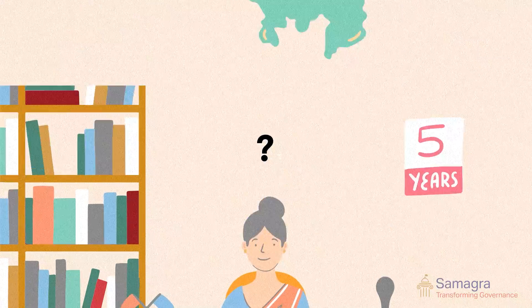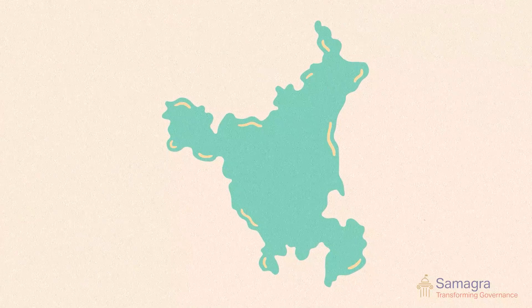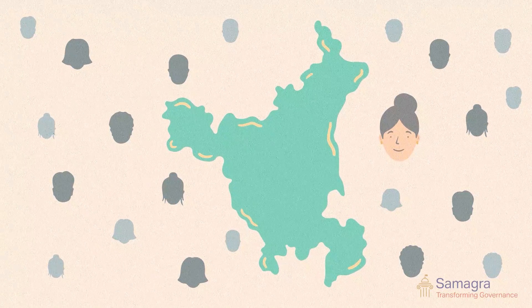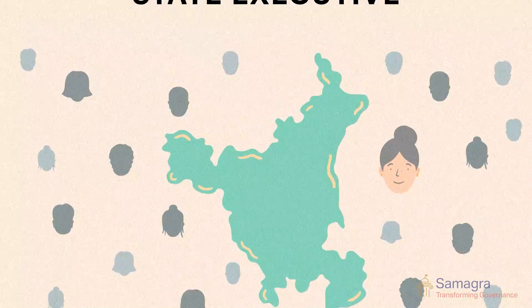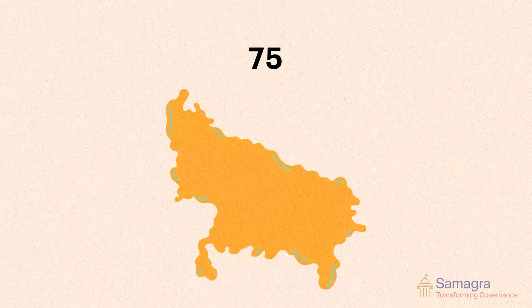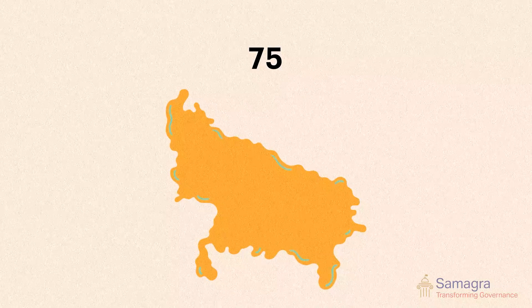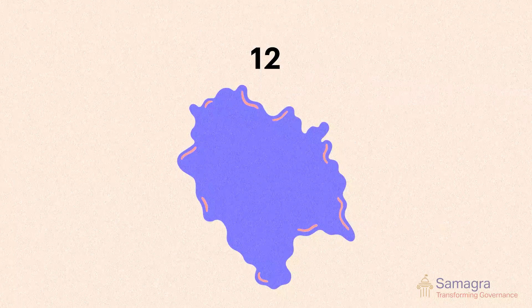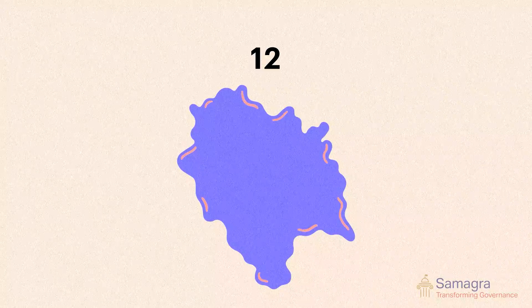How many such implementers-in-chief do states have? There is no fixed number. Haryana, with its 22 districts, has 22 DCs who report to the state executive. Uttar Pradesh has 75, while Himachal Pradesh has 12.